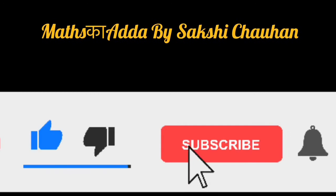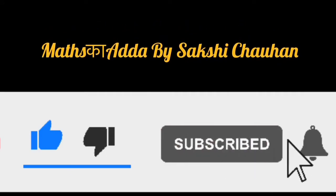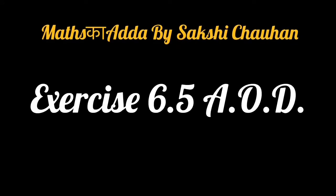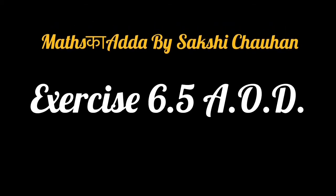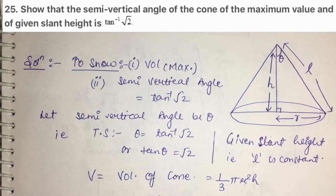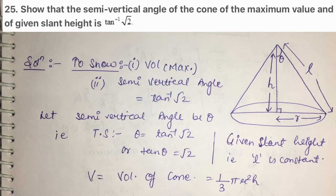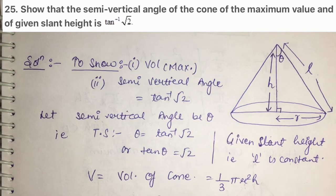Today I will discuss questions 25 and 26 of Exercise 6.5. Question number 25 says: show that the semi-vertical angle of the cone of the maximum volume and of the given slant height is tan⁻¹(√2).